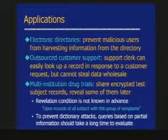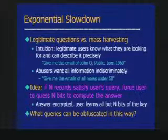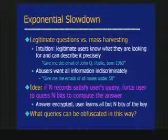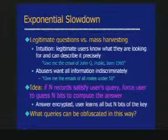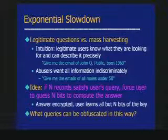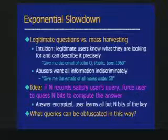I'll call it exponential slowdown. What separates legitimate questions from mass harvesting is that legitimate users know what they're looking for and can describe it precisely, whereas abusers just want everything. So I'm going to build an obfuscated construction where the idea is: if you ask a query and there are n rows in the database satisfying it, you force the user to guess n bits to compute the answer. The answer is encrypted and the user learns all but n bits of the key. So if your condition matches two records, you need to guess two bits — very easy. But if it matches many records, it becomes exponentially hard.